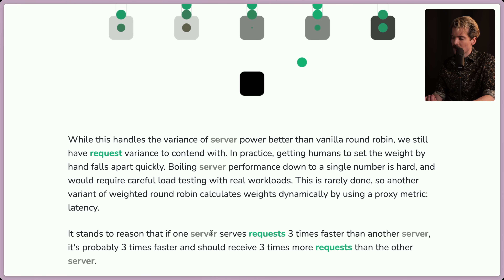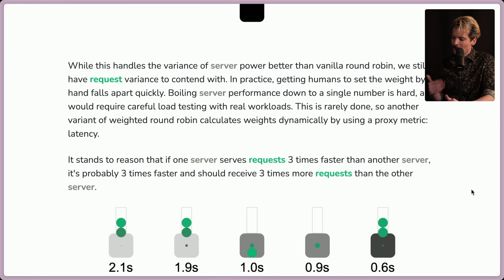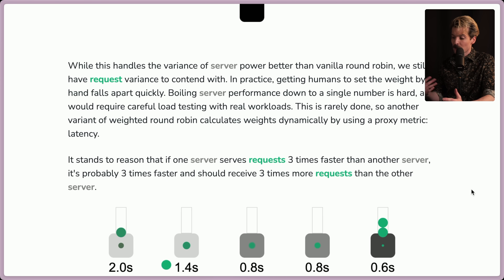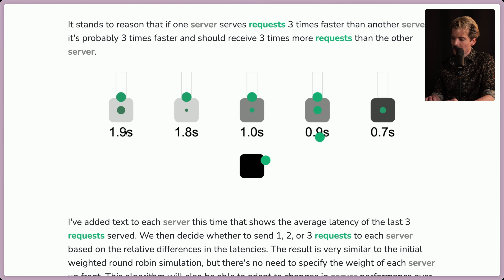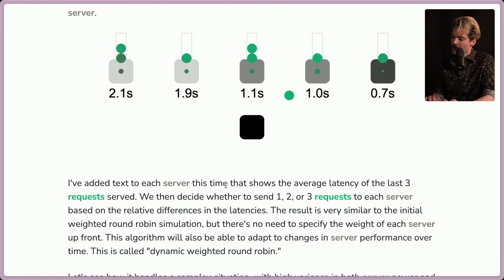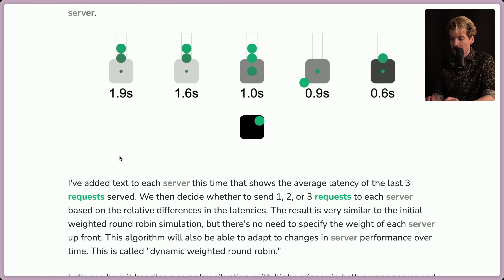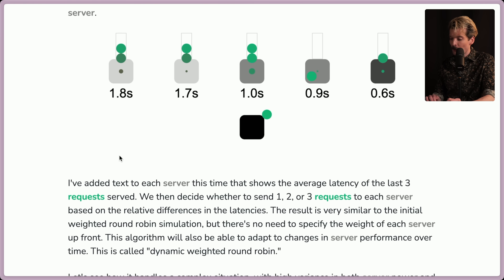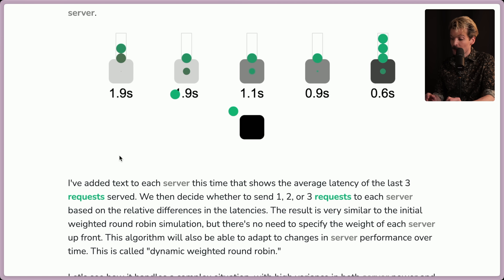Another variant of weighted round robin weighs dynamically by using proxy metrics — specifically latency. If one server serves requests three times faster than another, it's probably three times faster and should receive three times more requests. The load balancer shows the average latency of the last three requests served per server, then decides whether to send one, two, or three requests based on relative latency differences. The result is very similar to the initial weighted round robin, but there's no need to specify weights up front. This algorithm also adapts to changes in server performance over time — it's called dynamic weighted round robin.